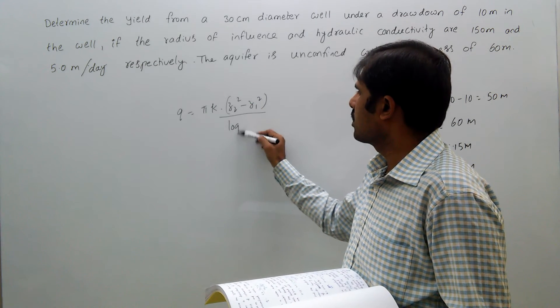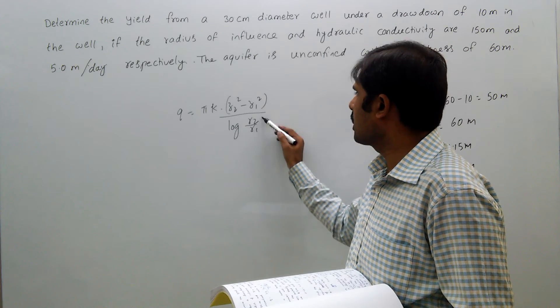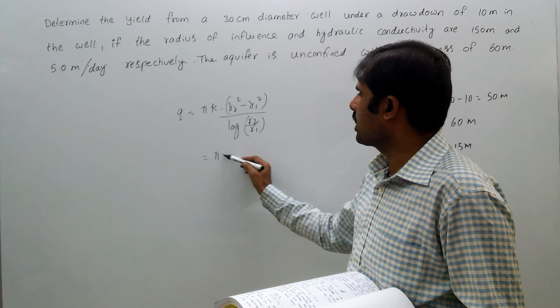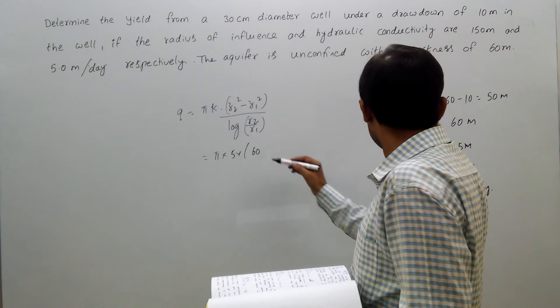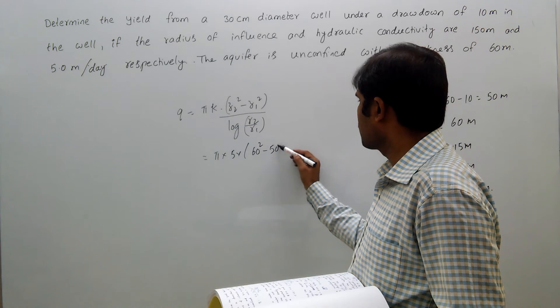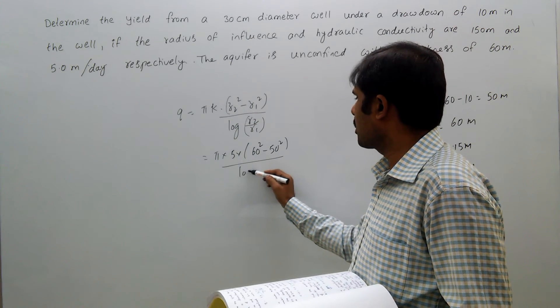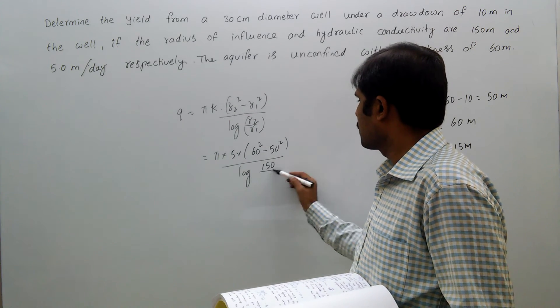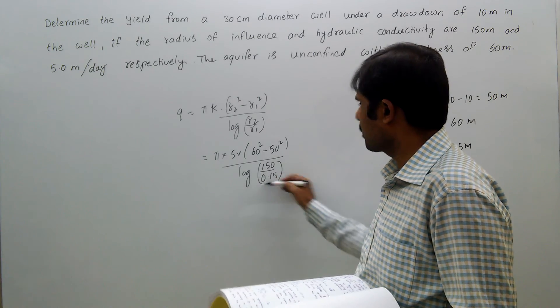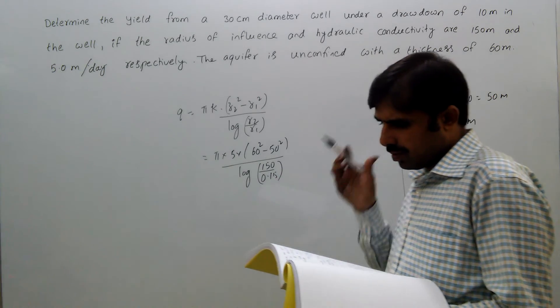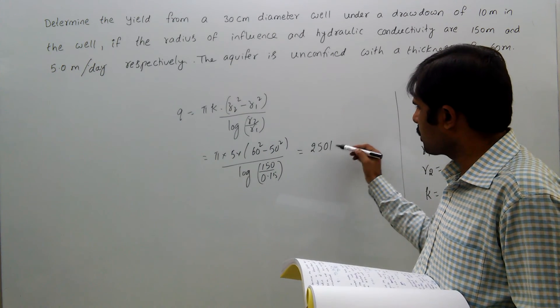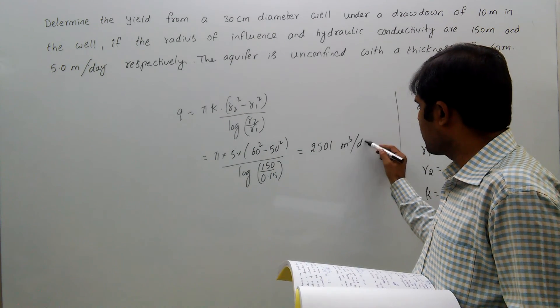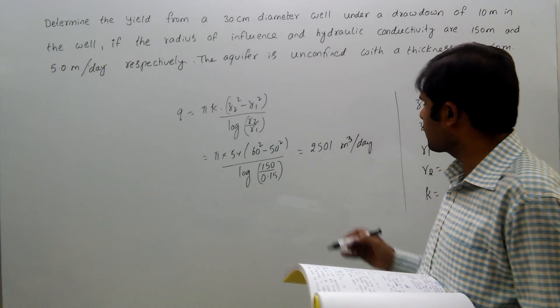That equals pi times 5 times (60 squared minus 50 squared) divided by log of (150 by 0.15). This equals 2501 cubic meters per day. That is the yield or discharge.